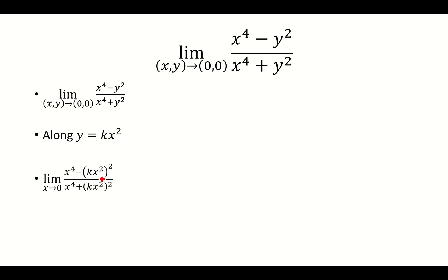So replace y with kx squared, square it, you get x to the 4th minus k squared times x to the 4th over x to the 4th plus k squared times x to the 4th.